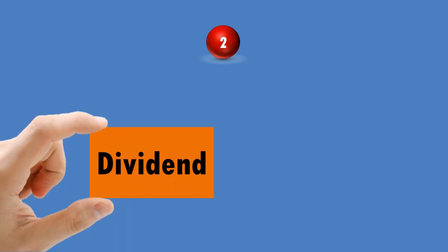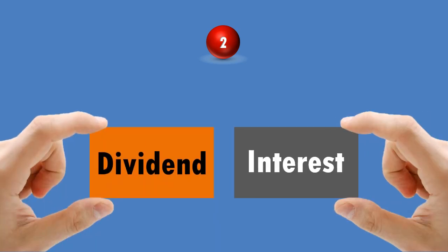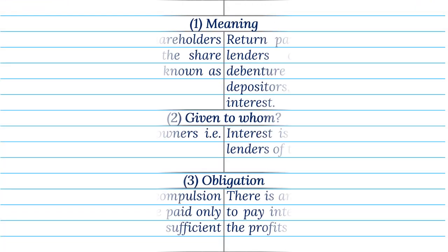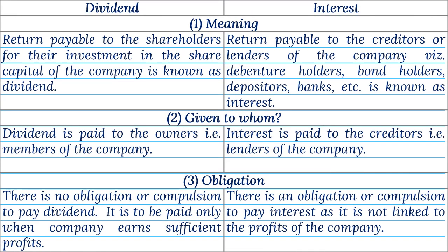Part 2: Distinguish between Dividend and Interest. Point 1 — Meaning: Return payable to the shareholders for their investment in the share capital of the company is known as dividend. Return payable to the creditors or lenders of the company, namely debenture holders, bond holders, depositors, banks, etc., is known as interest.